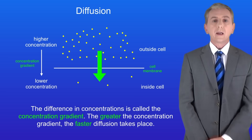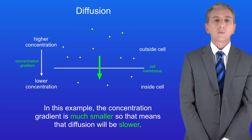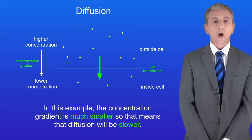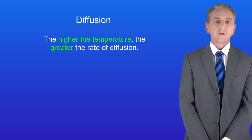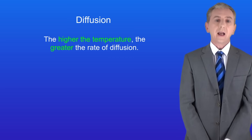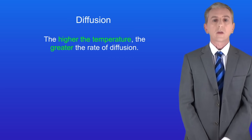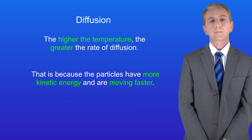In this example the concentration gradient is much smaller, so diffusion will be slower. The second factor that affects the rate of diffusion is temperature. The higher the temperature, the greater the rate of diffusion. That's because the particles have more kinetic energy and they're moving faster.